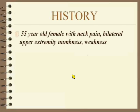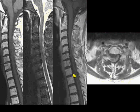Neck pain, bilateral upper extremity numbness and weakness. T1 on the left, T2 in the middle, and post-contrast sagittal, post-contrast axial.